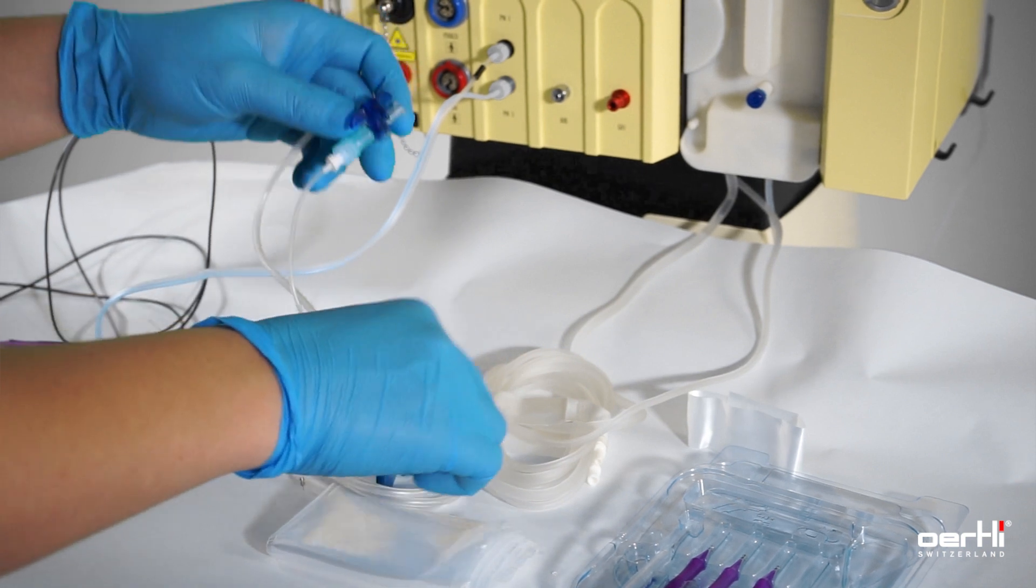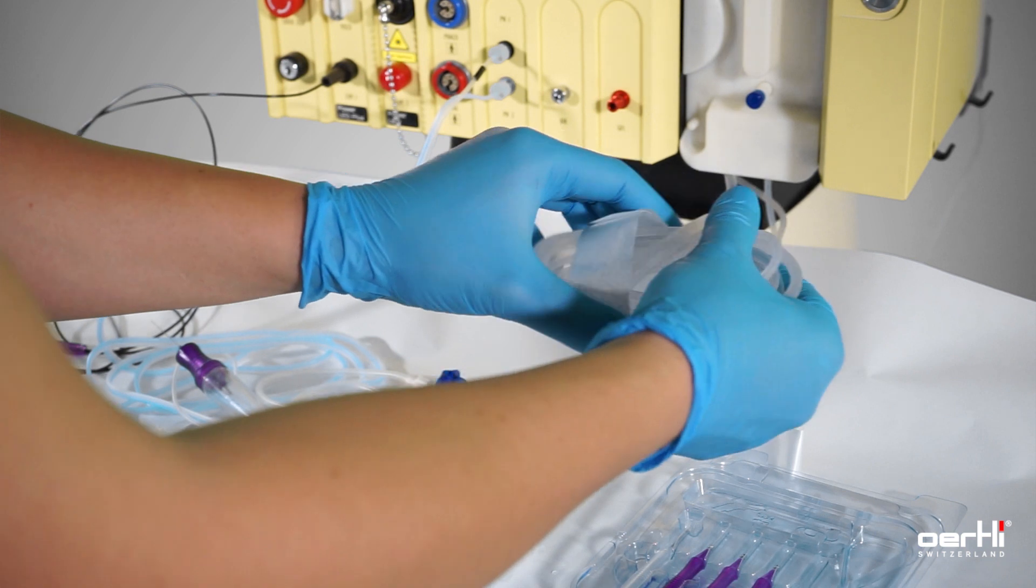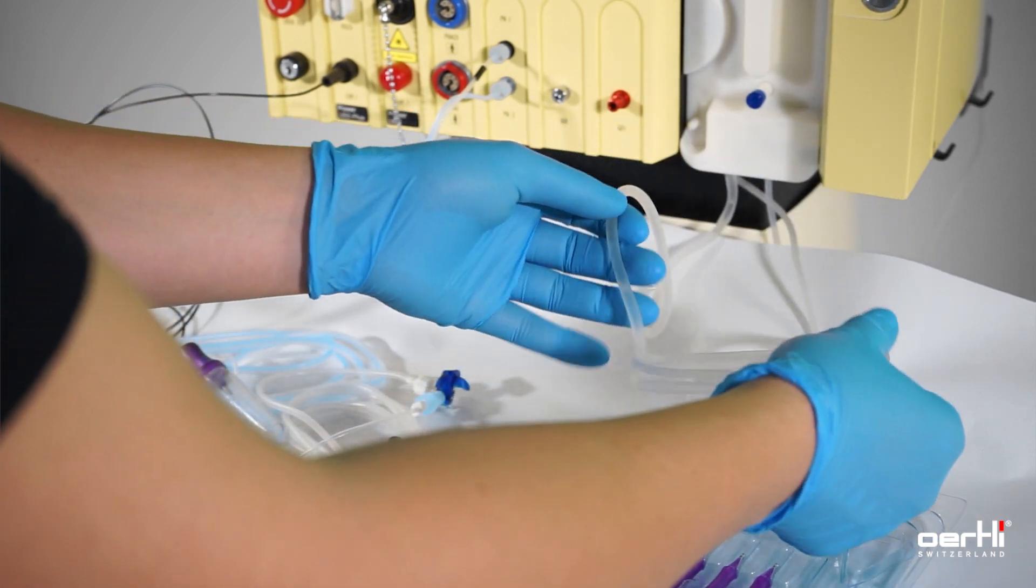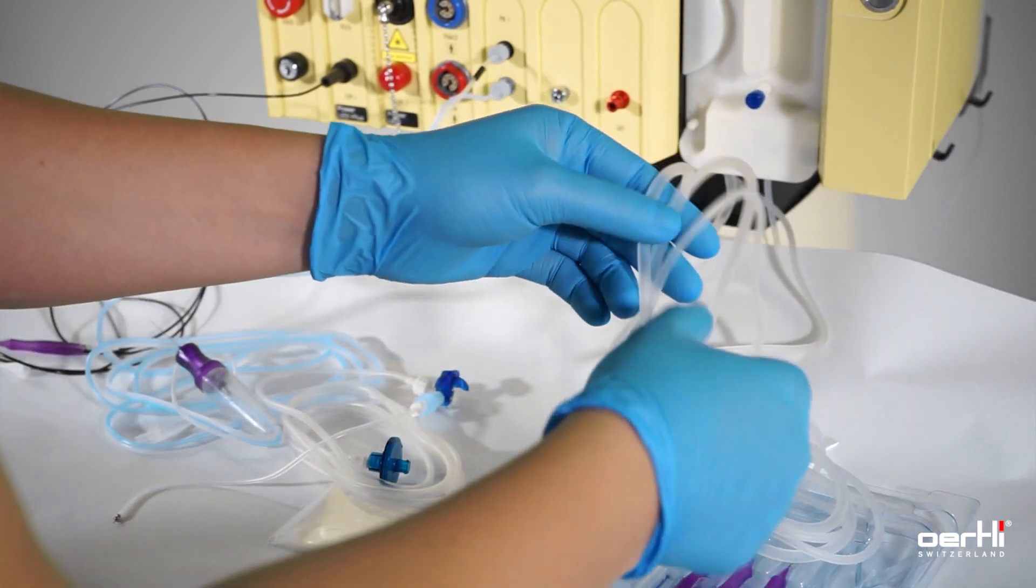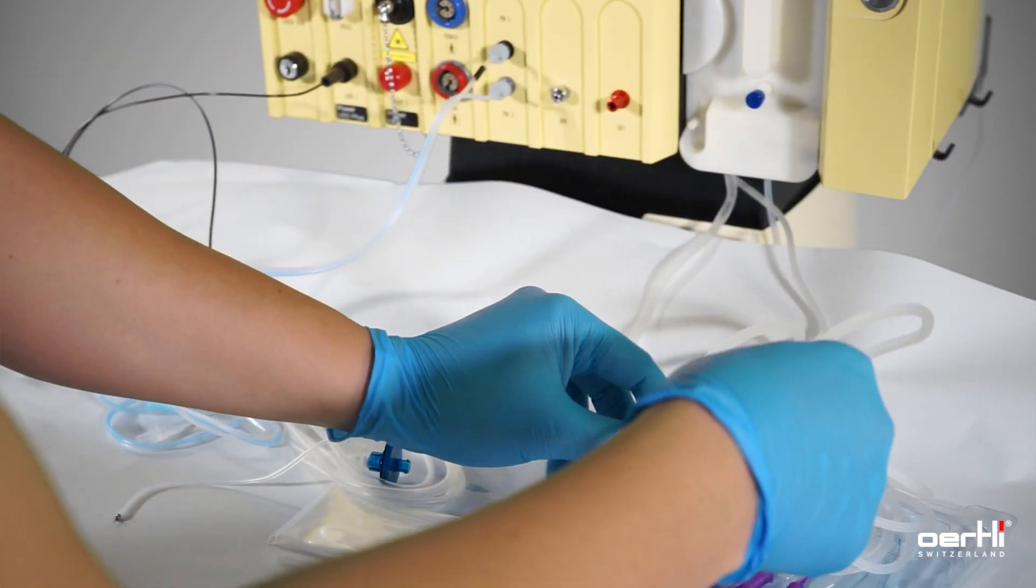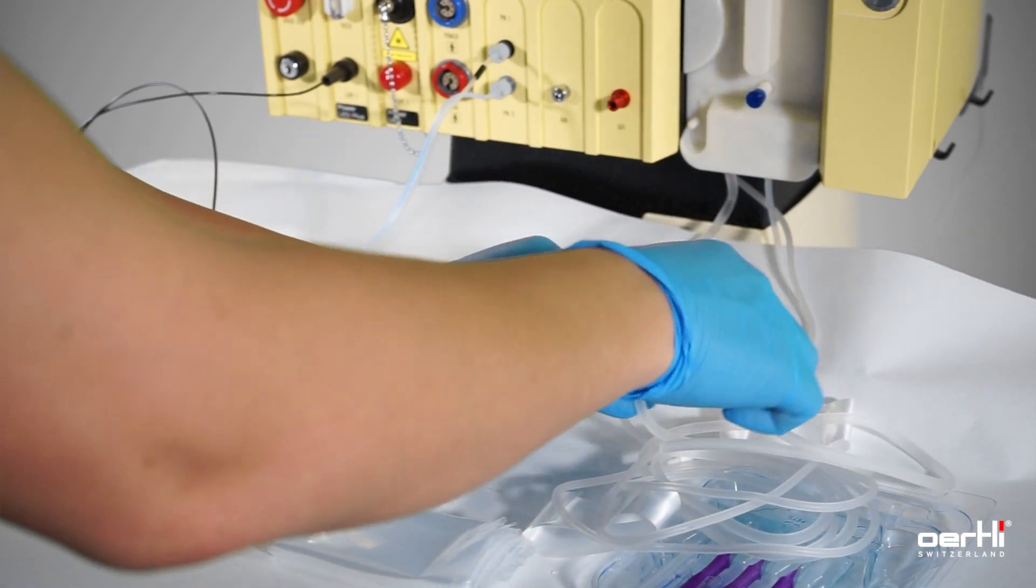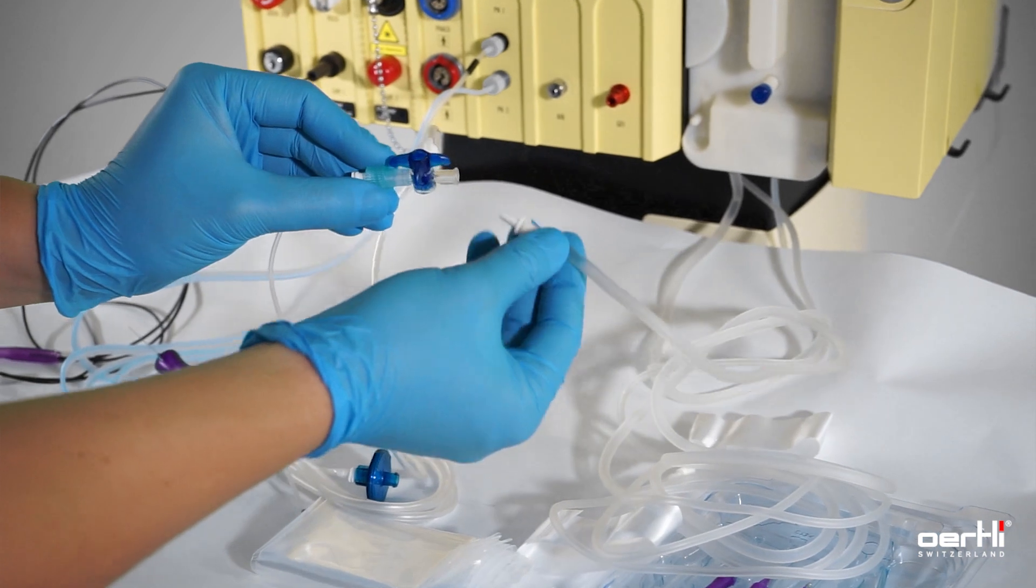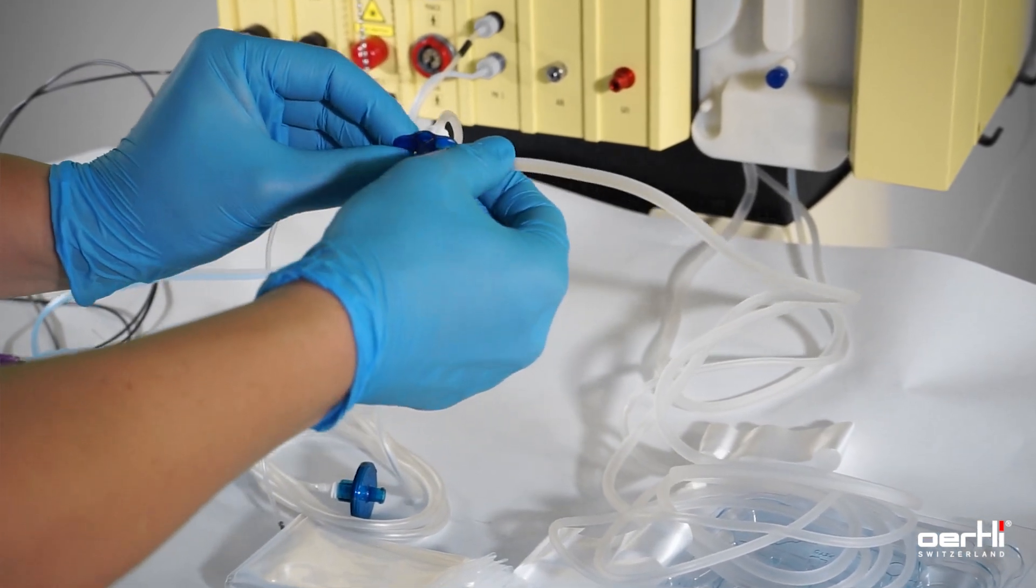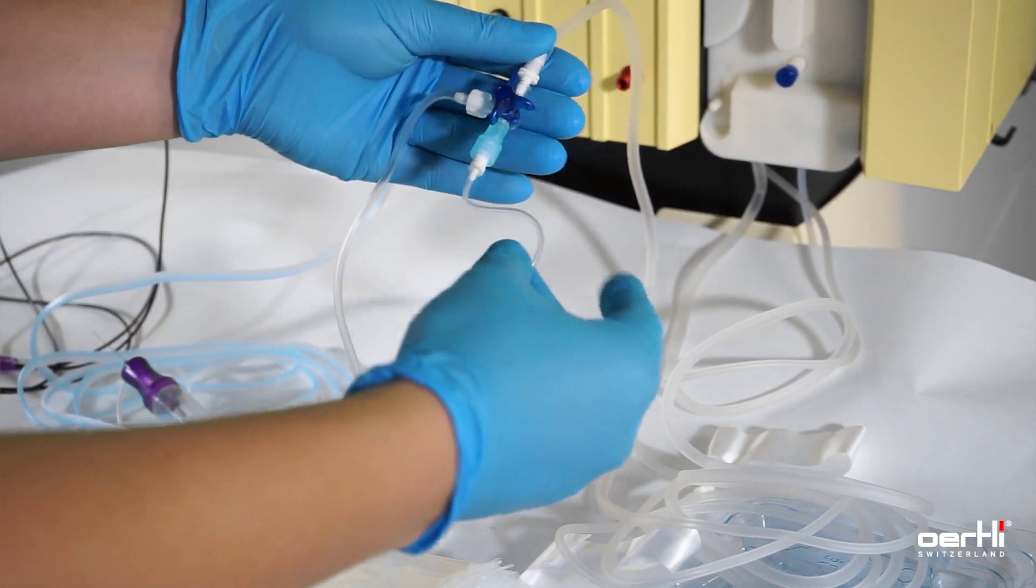Then use the irrigation line from the cassette side and connect also the three-way stepcock. So the irrigation side is now ready.